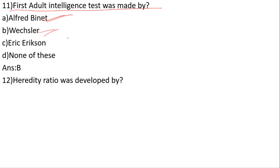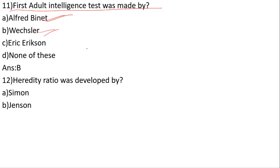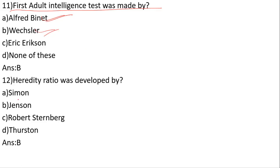Who developed the heredity ratio? Options: Jensen, Robert Sternberg, Thurston. The correct answer is option B — Jensen developed the heredity ratio.